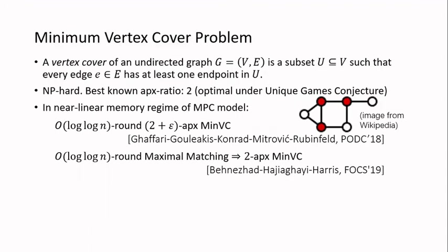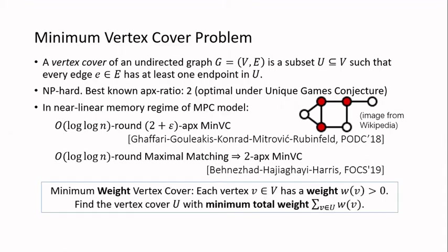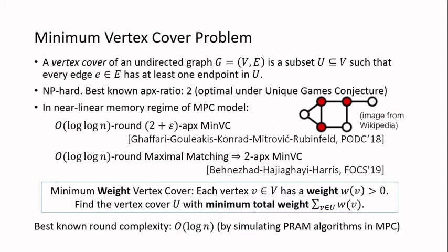In the near-linear regime of MPC, there is a log log n round algorithm for 2 plus epsilon approximation of minimum vertex cover, and also a 2-approximation algorithm which follows from the maximal matching algorithm by taking all matched vertices. In this paper, we look at the weighted version: each vertex v has a positive weight, and we want to find the vertex cover with minimum total weight. The previous log log n round algorithms only work for the unweighted version; for the weighted version, the previously best-known round complexity is log n, following from simulating PRAM algorithms.